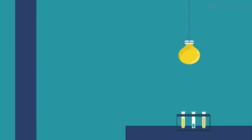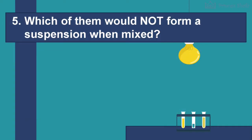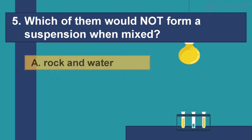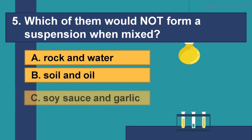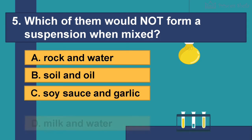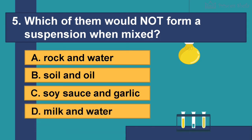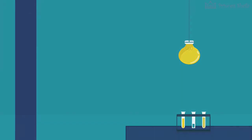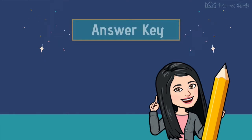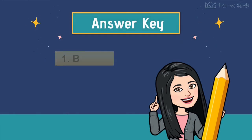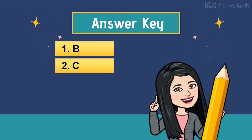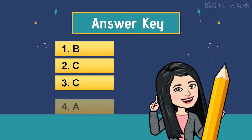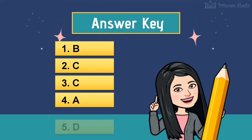Number 5: Which of them would not form a suspension when mixed? A — rock and water, B — soil and oil, C — soy sauce and garlic, D — milk and water. Here are the answers: Number 1 is B, Number 2 is C, Number 3 is C, Number 4 is A, Number 5 is D.